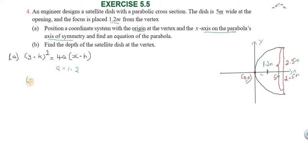So the equation is (y - 0)² = 4(1.2)(x - 0). Therefore, y² = 4 × 1.2 = 4.8x. So the parabola equation is y² = 4.8x.